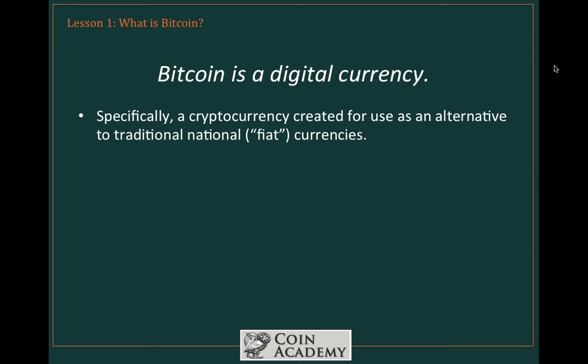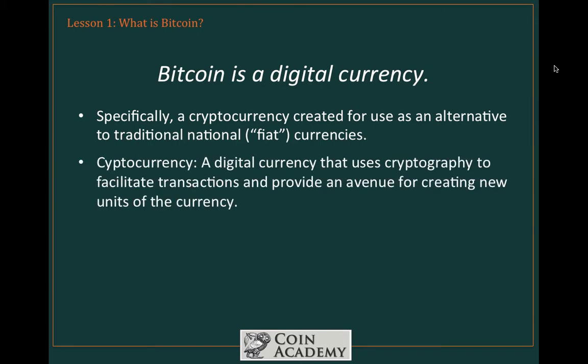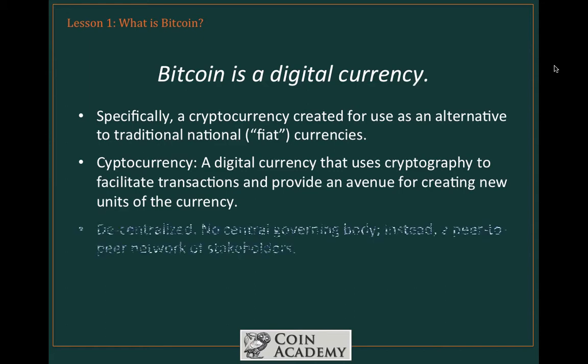A cryptocurrency is a type of digital currency that uses cryptography to facilitate transactions and provide an avenue for creating new units of the currency. Both of those characteristics apply to Bitcoin. One of the other key attributes of Bitcoin is that there is no central bank — it is decentralized, with no central governing body. Instead, there is a peer-to-peer network of stakeholders spread out all over the world. The stakeholders themselves are distributed around the world, and they all have an interest in maintaining the integrity of the Bitcoin network. The algorithms and mathematical formulas used to create Bitcoin can't be modified by stakeholders, so it retains quite a bit of autonomy.